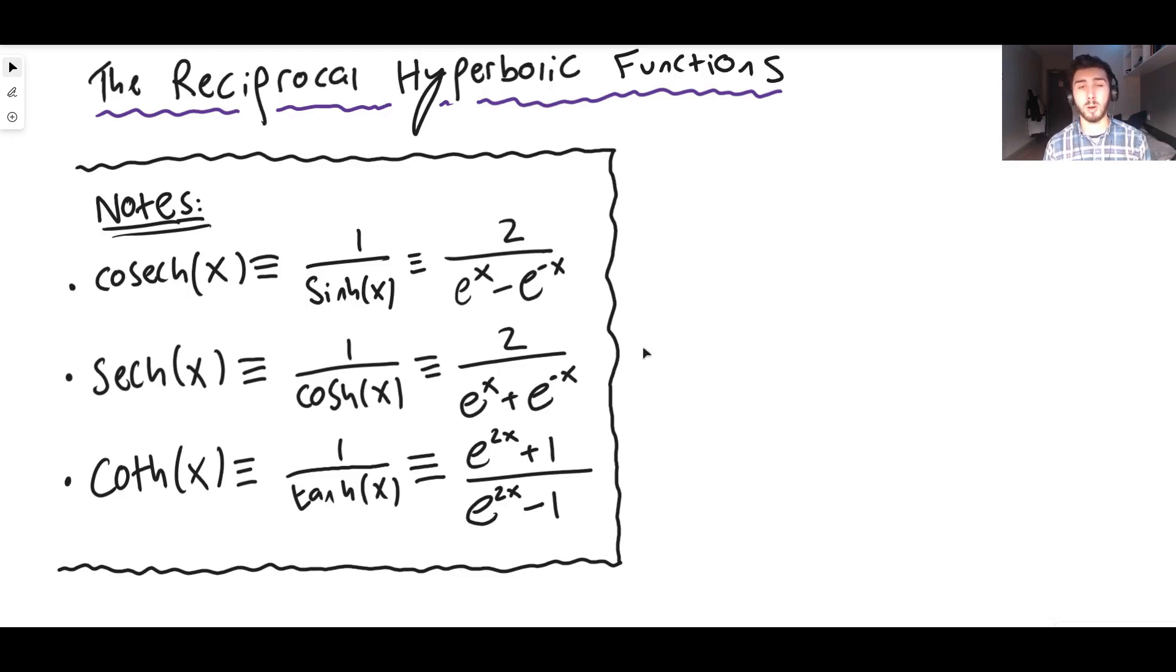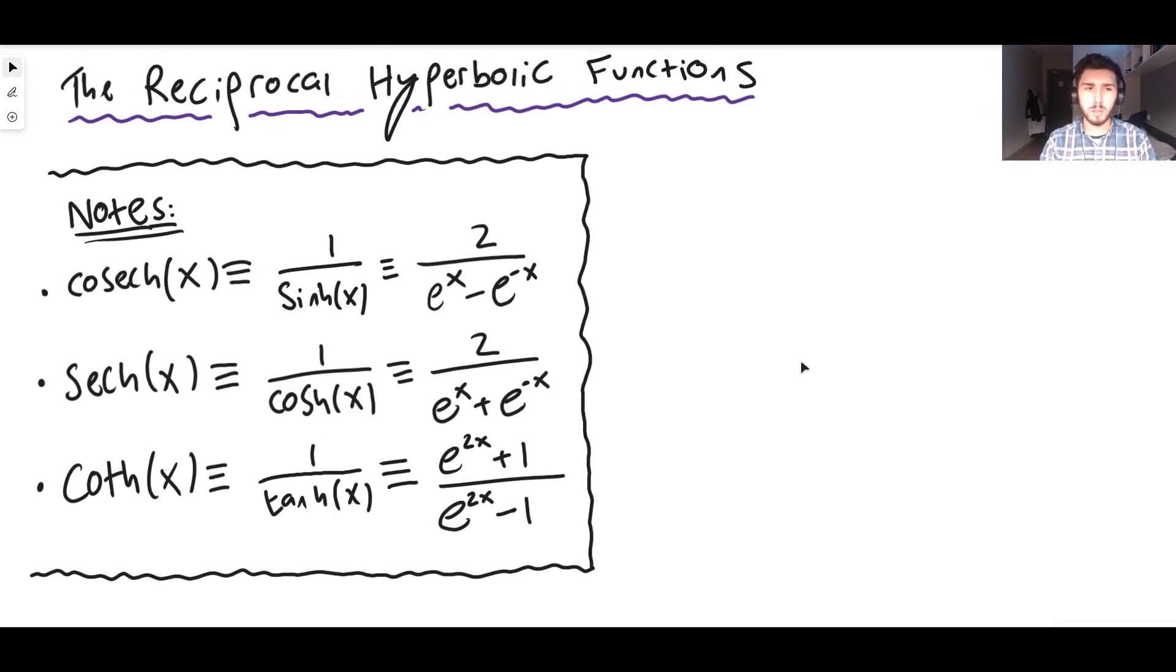So shine is e to the x minus e to the minus x over two. So cosech is two over e to the x minus e to the minus x. It's literally just the fraction flipped over. That's what they are.